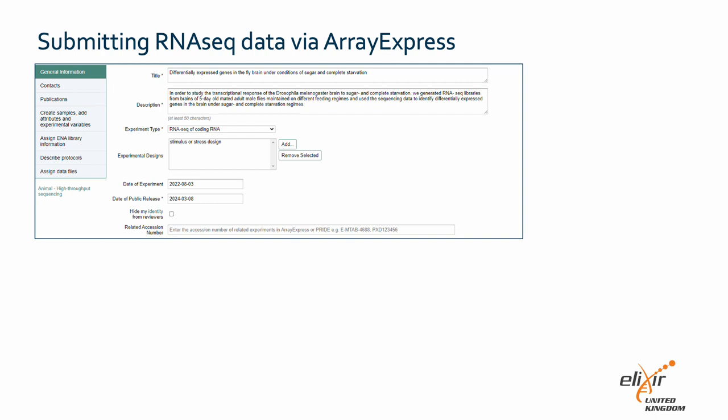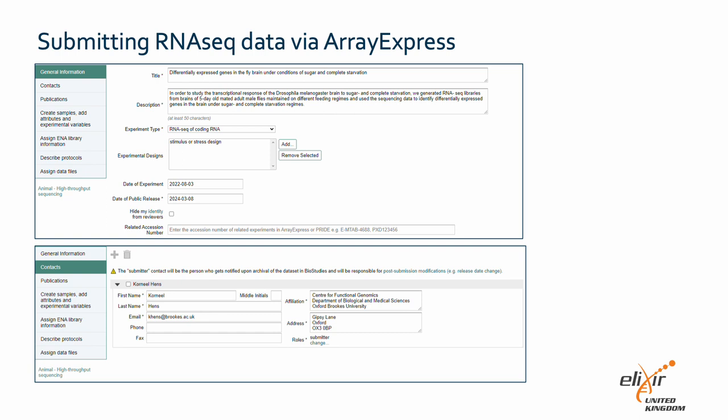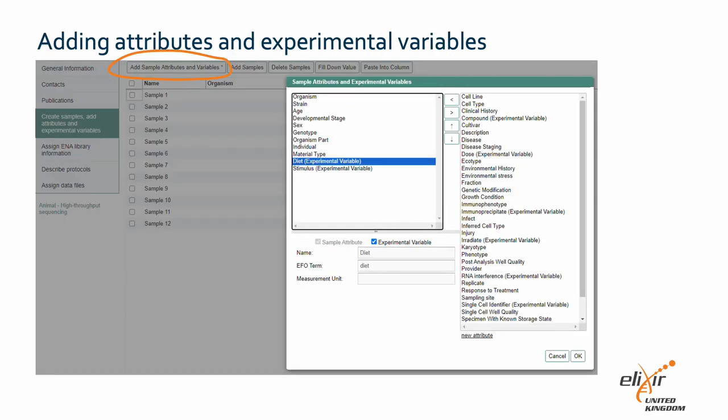You now end up with a form with different tabs that all need to be completed. Under 'General Information,' provide a title, a description, the experiment type, design, the date of the experiment, and date of release if you want to embargo the data before publication. Under 'Contacts,' complete your contact information. The next tab allows you to add attributes and experimental variables to your samples. To do this, click 'Add sample attributes.' This will bring up a window that allows you to add or remove attributes relevant for your samples. Be as complete as possible — for example, we will add diet as an experimental variable.